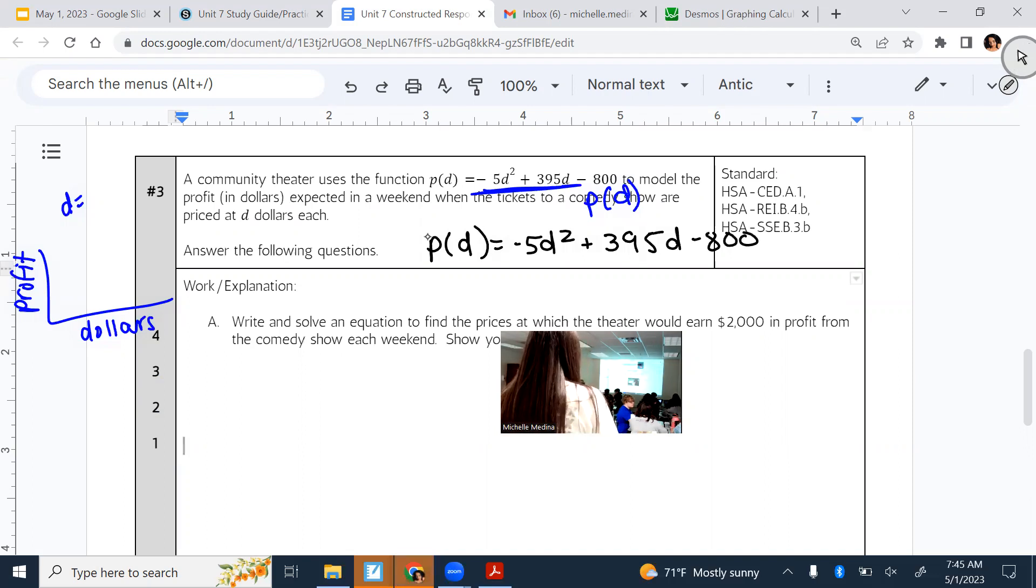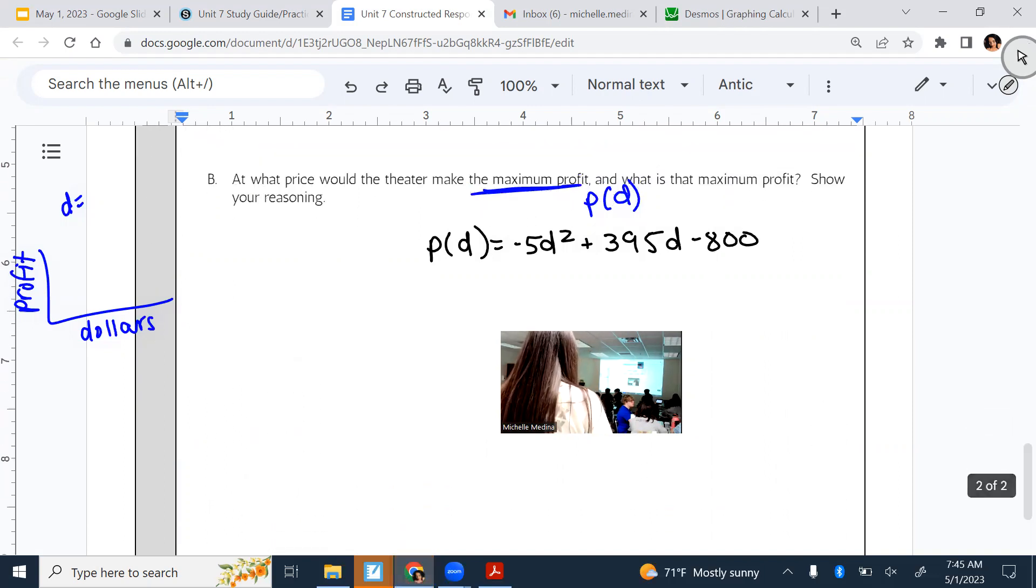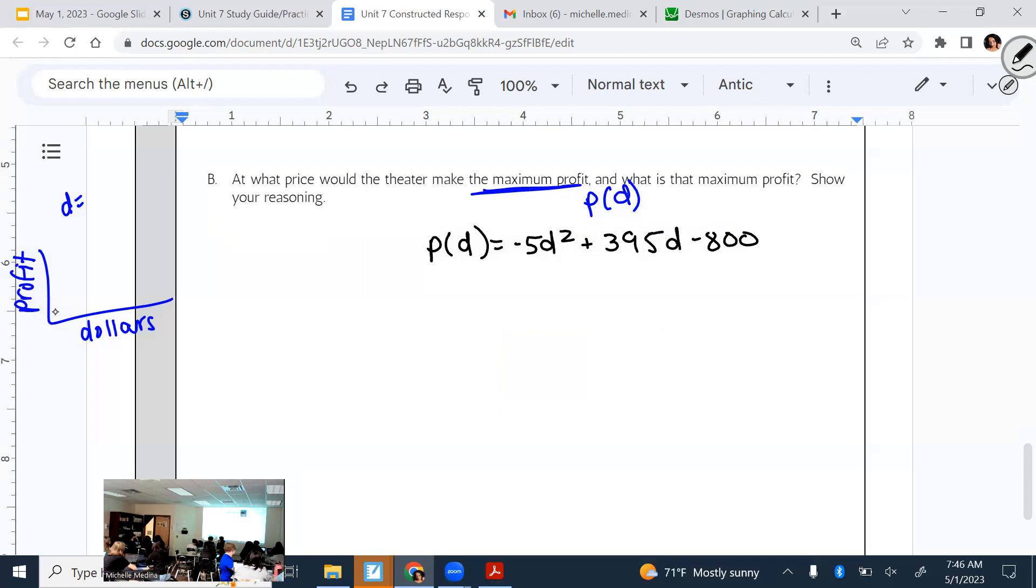So for that one, it was p of d equals negative 5d squared plus 395d minus 800. All right, I almost wish they reversed the order of A and B so that it's like you're not wanting to use the one from the previous problem. But we're trying to figure out where the maximum profit would be. So in that case, I don't think you can solve this one algebraically. I think you could really only solve it graphically. So say the graph looks something like this. I don't know what the graph looks like. Where would the maximum be on the graph? At the very top, also known as our vertex. And it'll be at what price would the theater make the maximum profit? So that's where the y is the greatest. We want to know what dollar amount, what the d is, that gives us that maximum profit.